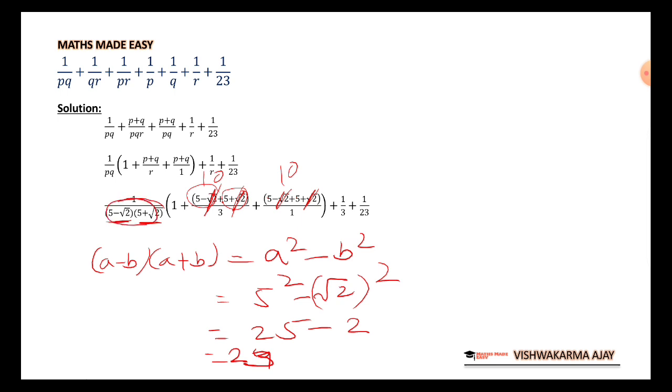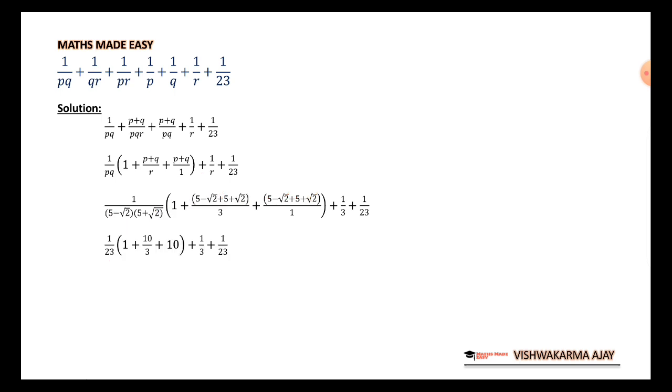So instead of this entire term, I am going to substitute 23 because of the finding. 1 upon 23, 1 plus 10 upon 3 plus 10 because root 2 and minus root 2 get cancelled. The rest is the same.